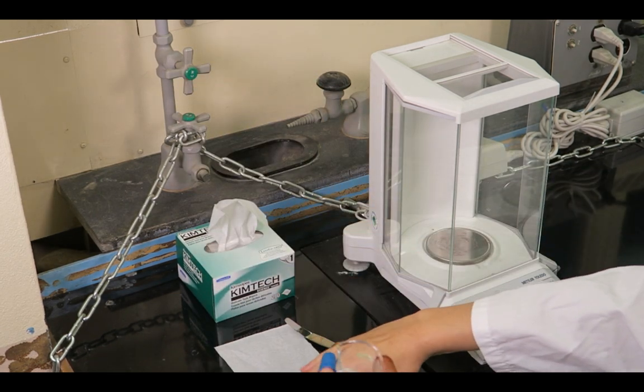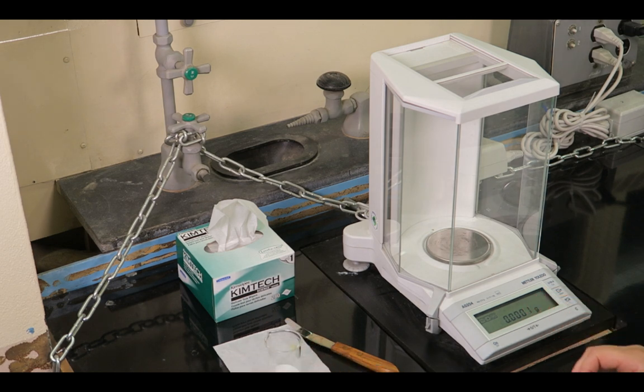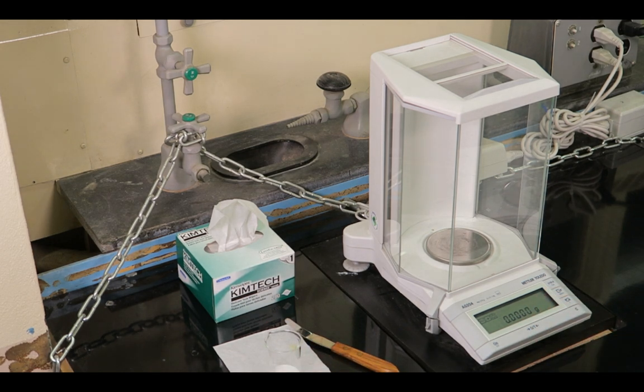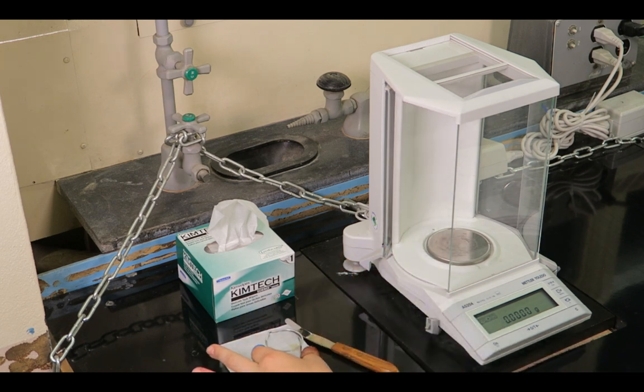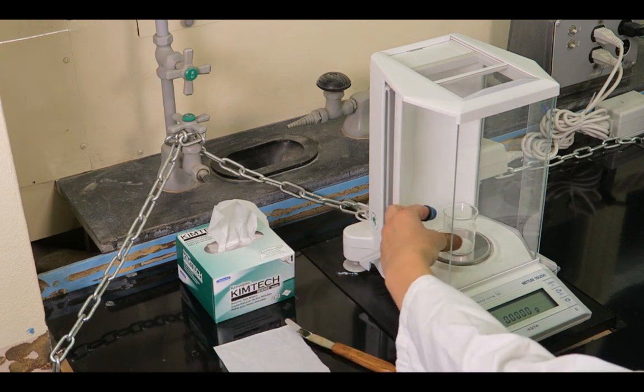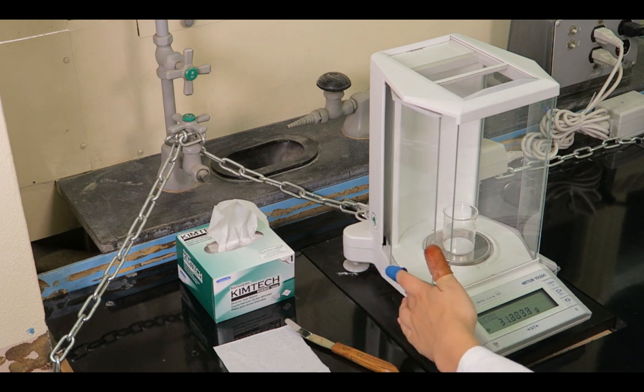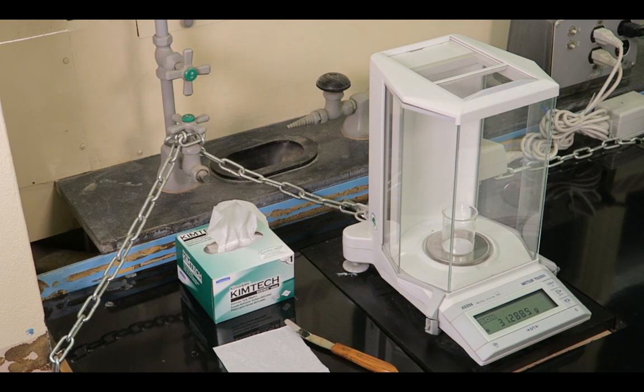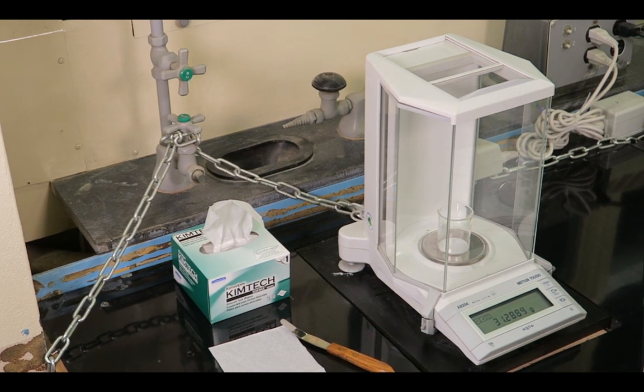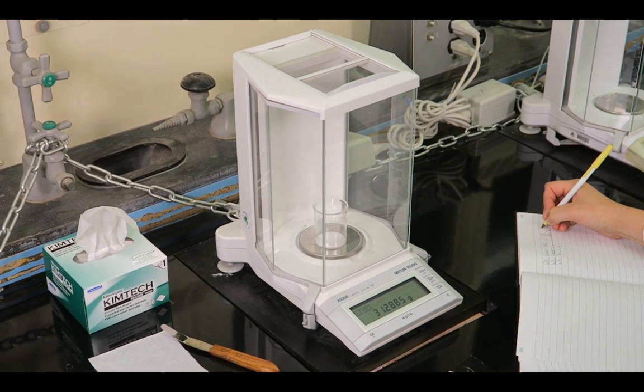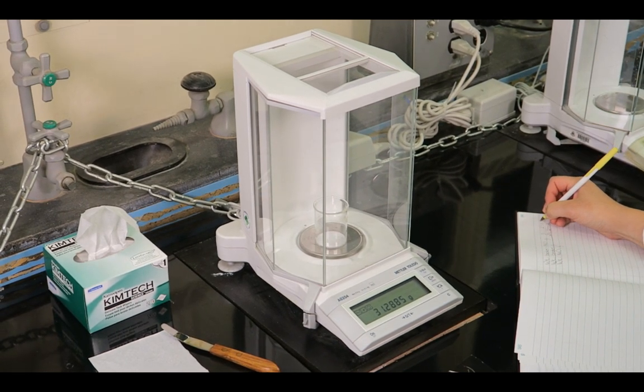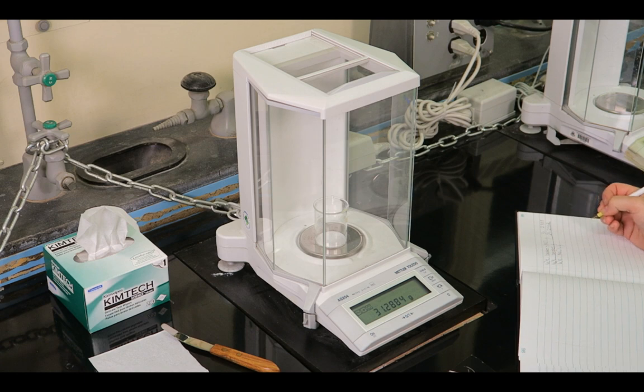Repeat the steps used to measure the empty beaker. Zero the balance with the balance doors closed. Place the beaker containing the compound on the center of the balance pan. Gently close all doors and wait for a stable reading. Once a stable reading is achieved, record the mass of the beaker and compound in your laboratory notebook.